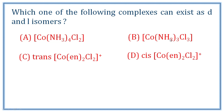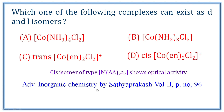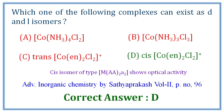Option B is a cobalt complex of MA3B3 type — this shows facial/meridional isomerism and is optically inactive. Next, option C is a chelating ligand type. The cis and trans isomers are inactive. The cis isomer has no non-superimposable mirror image, and the trans isomer has a plane of symmetry, making it inactive. The correct option can exist as a DL pair.